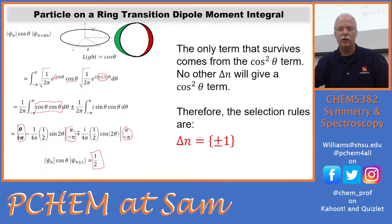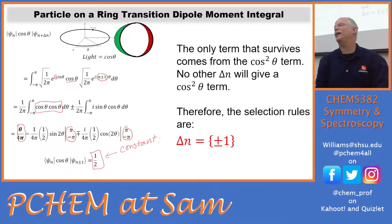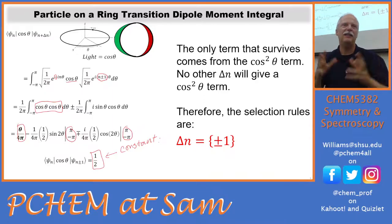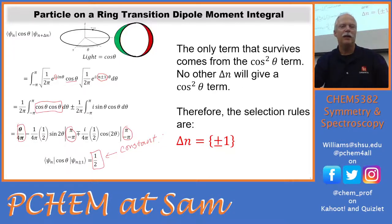So Δn = ±1 is our selection rule, and it can be shown in the calculus as the only non-zero result. That was a contribution of one of my master's students just a few years back. The transition dipole moment integral is just a constant value — a constant probability of one half. If you've got molecules in that state, it's like a 50-50 chance of absorbing or not, only up or down one unit. It's totally governed by the Boltzmann distribution and the degeneracy. So that's our particle on a ring — and it's relevant to rotation. Let's talk about vibration now.